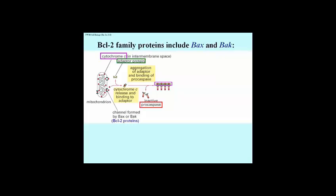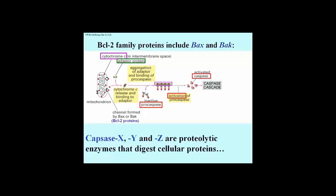The procaspase proteins are inactive proteolytic enzymes. These proteins are then hydrolyzed themselves, releasing active caspases. Caspases X, Y, and Z are enzymes that now catalyze the hydrolysis of cellular proteins, leading to death by apoptosis.